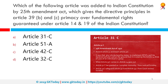Which article was added to the Indian Constitution by the 25th Amendment Act, giving directive principles in Article 39B and C primacy over fundamental rights under Articles 14 and 19? The correct answer is Article 31C. The 25th Amendment of the Constitution in 1971 added Article 31C, whose underlying objective was to usher in a socialist pattern of society. Article 31C had two parts protecting laws giving effect to state policy under Article 39B and C.